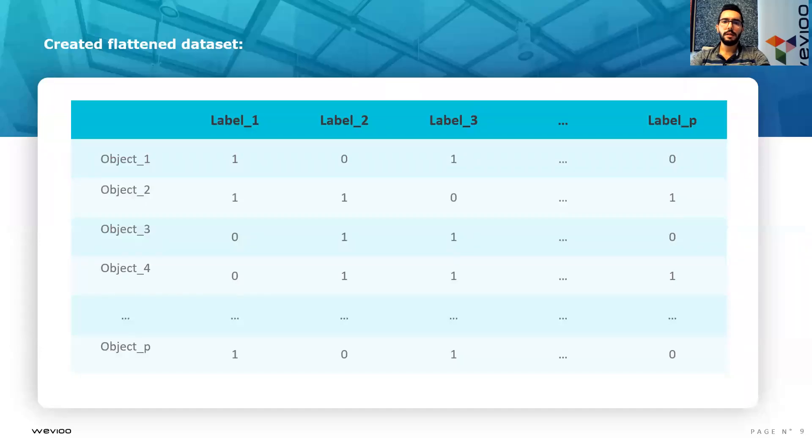Here's an example that illustrates how the flattened dataset will look like. As we mentioned previously, the columns are existing labels in the multivalued attribute across all objects. For example, for object one, it is mentioned in label one and label three in its list of values.